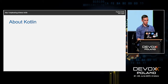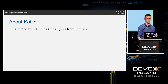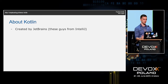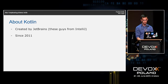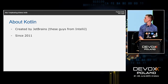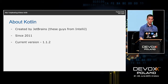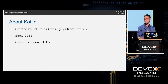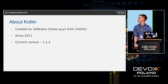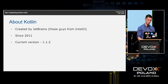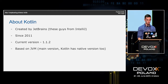A few words about Kotlin. This language was created by JetBrains — yes, the same guys who created IntelliJ, which probably most of you use. This language has been developed since 2011, steadily since then. The current version is 1.1.2, and the first stable version was released in February 2016, so not long ago.